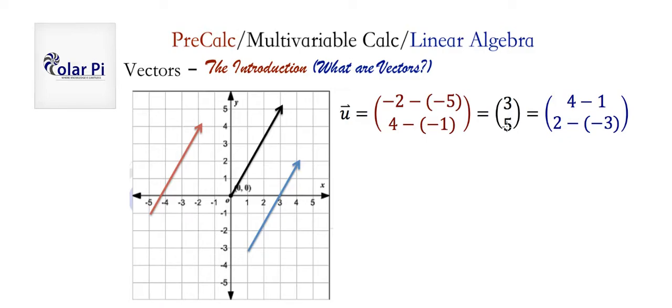The vector u here would be the vector 3 comma 5, with 3 showing the x component and 5 showing the y component. The computation of the x component and the y components is we subtract the coordinates of the initial end from the coordinates of the terminal end.